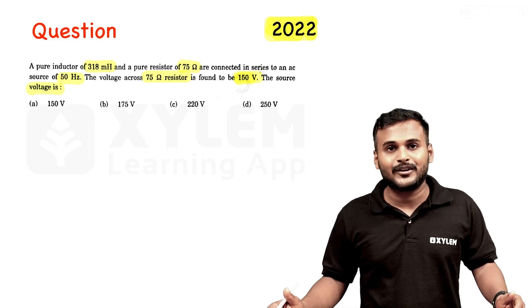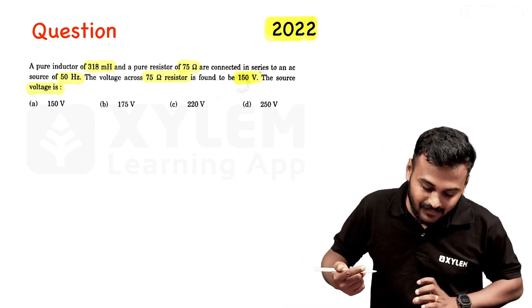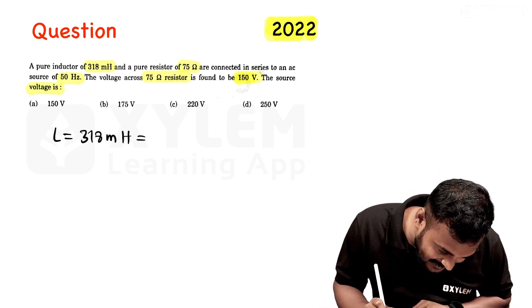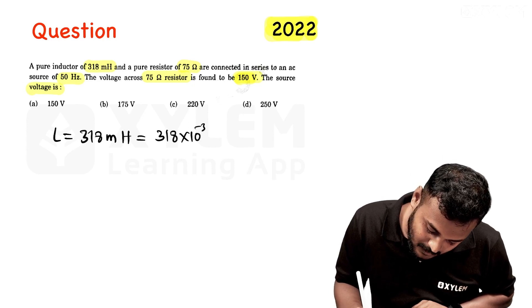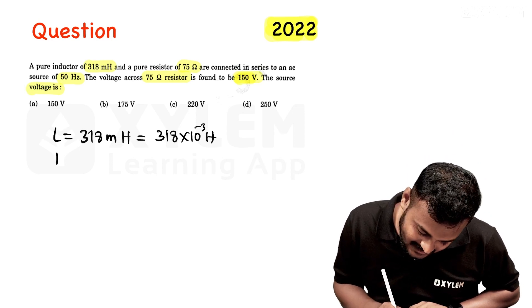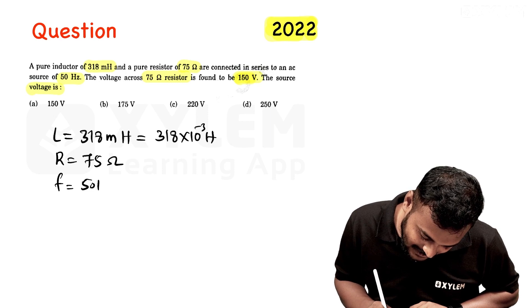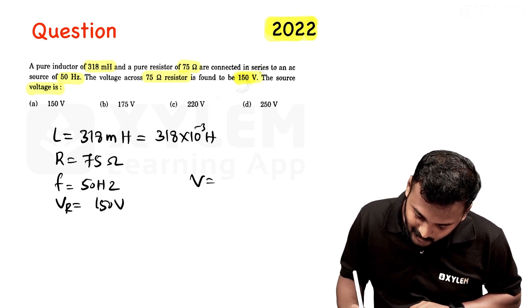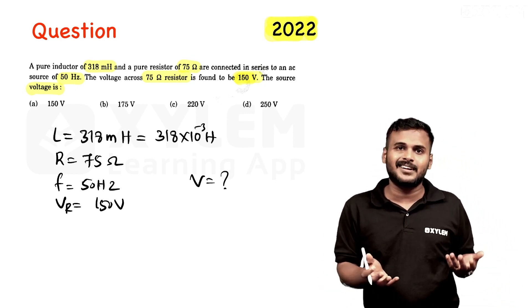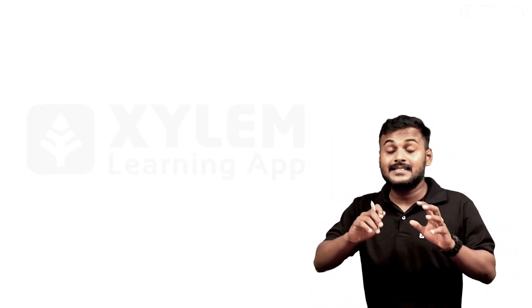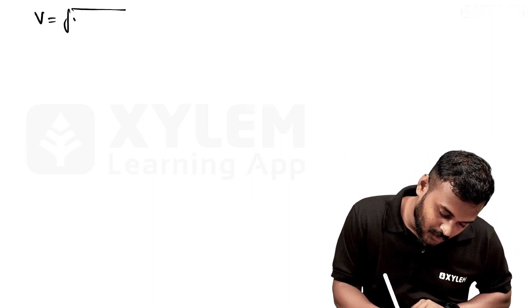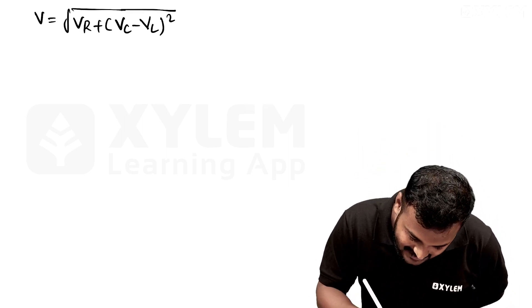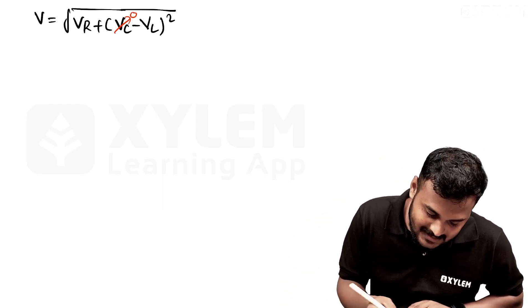There is another question about source voltage. The frequency is 50 Hz, inductance is 318 millihenry, and voltage across the resistor is 150 V. We need to find the source voltage V. We use V equals root of (VR squared plus VL squared). We need to find VL first. VL equals I × XL, and I equals VR divided by R.